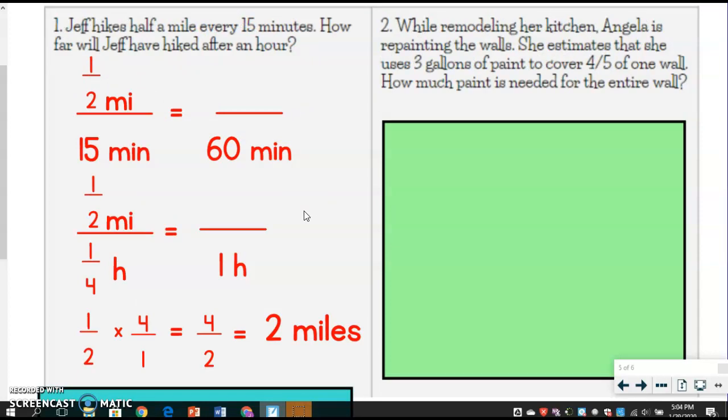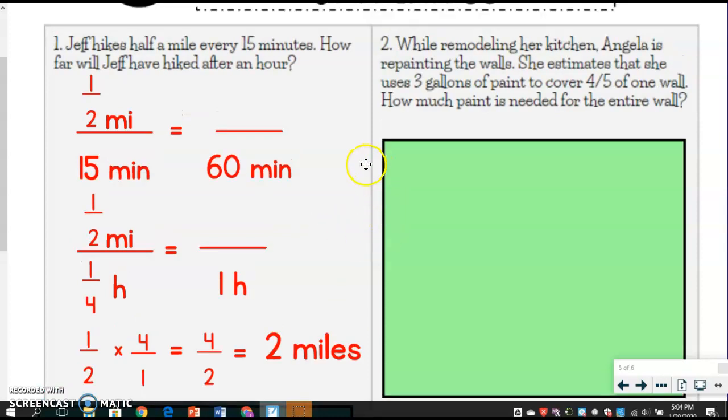Okay, let's try another one where you can see why we might want to use the fraction more than the decimal or a whole number. So let's look at this next problem. So while remodeling her kitchen, Angela is repainting the walls. She estimates that she uses three gallons of paint to cover four-fifths of one wall. How much paint is needed for the entire wall? So she can almost get the whole wall with three gallons. She just couldn't quite. So we're going to figure out, okay, how much is she really going to need for an entire wall? Well, and we'll go from there.